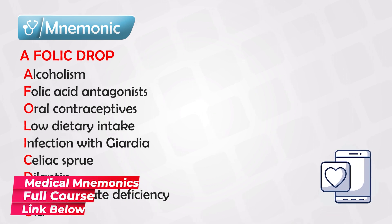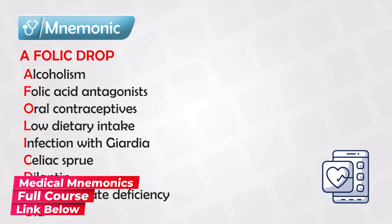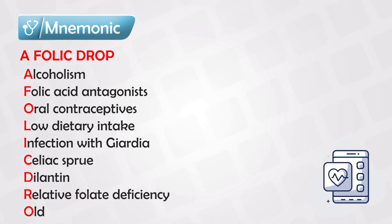Once the diagnosis of megaloblastic anemia is made, we have to look for the causes. To remember the causes, remember A FOLIC DROP. Alcoholism, because it interferes with the absorption of folate.